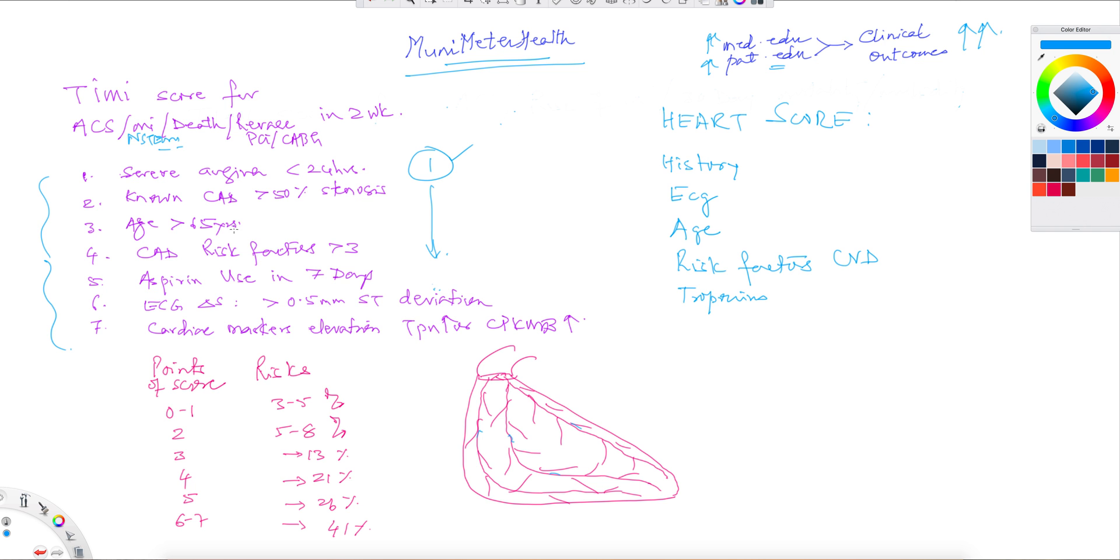Age 65 and above automatically give you a score of one. CAD risk factors more than three, like hypertension, diabetes, smoking, high cholesterol, or family history. These are your risk factors. Anything more than three risk factors in that individual, you give a score of one again.